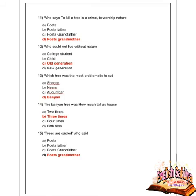Next question: who could not live without nature? Options are college student, child, old generation, and new generation. Option C is correct — the old generation could not live without nature. Next question: which tree was the most problematic to cut? Options are shevga, neem, audumbar, and banyan. Option D is correct — the banyan tree was the most problematic to cut.